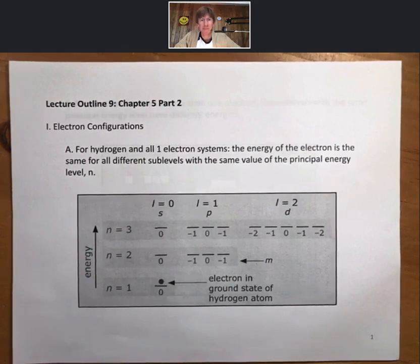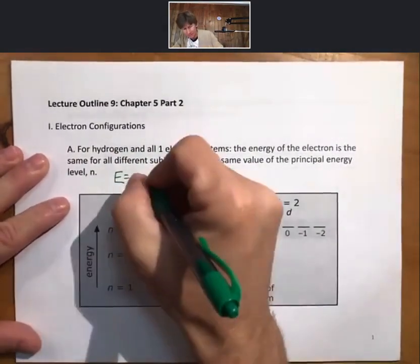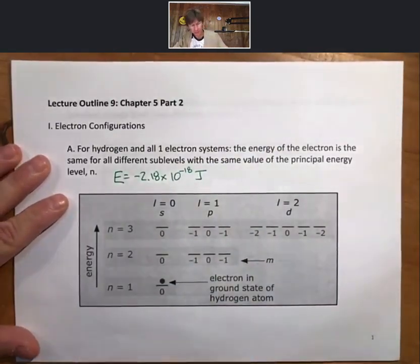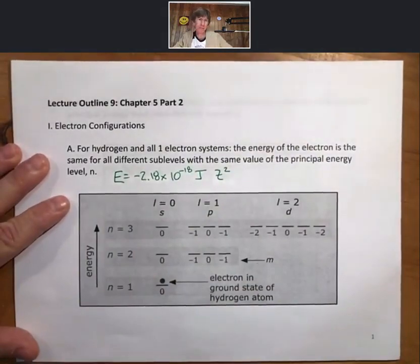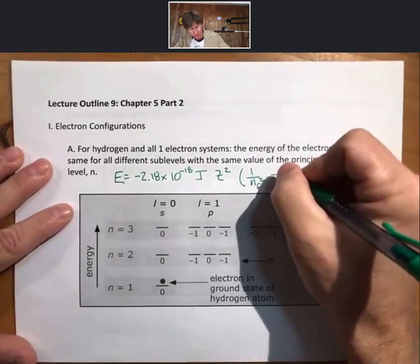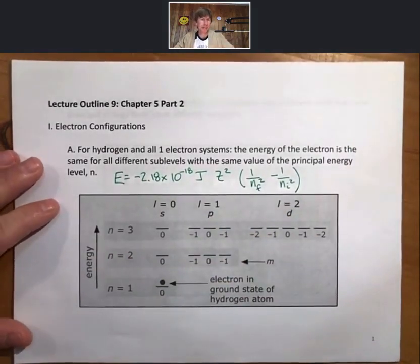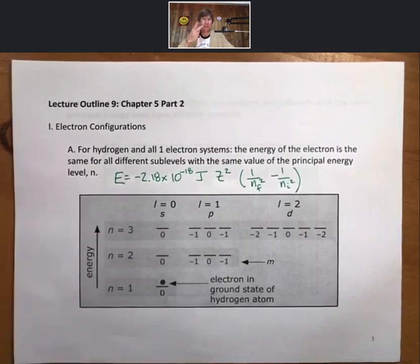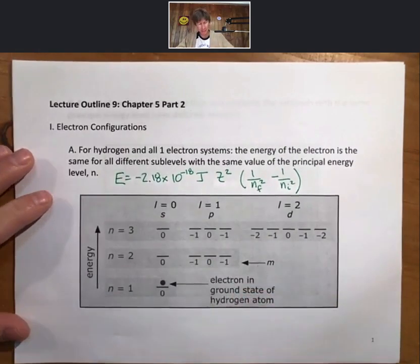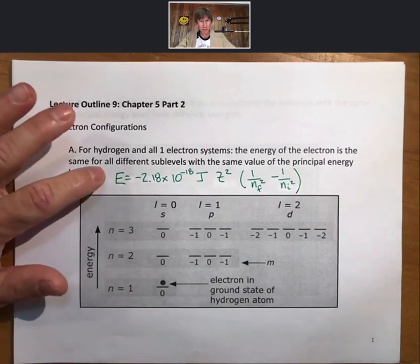The energy of the electron is the same for all different sublevels with the same value of the principal energy level, n. We have an equation for this. These are the one-electron systems. Energy equals minus 2.18 times 10 to the minus 18 joules times z squared times the quantity 1 over n final squared minus 1 over n initial squared. This equation for hydrogen and all one-electron systems does not depend on sublevel because for one-electron systems, there are only two charged particles. And it doesn't matter whether it's in 2s or 2p, the energy will be the same. This is only for one-electron systems.